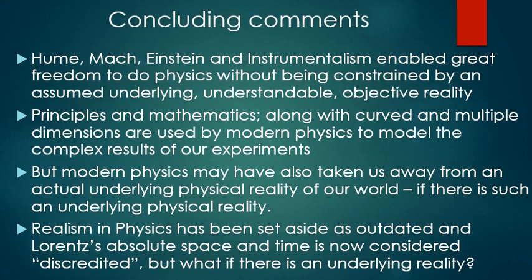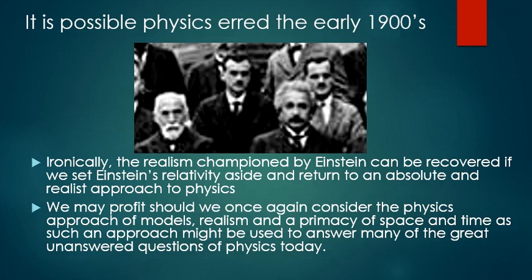Hume, Mach, Einstein, and instrumentalism enabled great freedom to do physics without being constrained by an assumed underlying, understandable, objective reality. Principles in mathematics, along with curved and multiple dimensions, are used by modern physics to model the complex results of our experiments. But modern physics may have also taken us away from an actual underlying physical reality of our world, if there indeed is such an underlying physical reality. Realism in physics has been set aside as outdated, and Lorentz's absolute space and time is now considered discredited. But what if there is an underlying reality? It is possible that physics made a mistake in the early 1900s. Ironically, the realism championed by Einstein can be recovered if we set Einstein's relativity aside and return to an absolute and realist approach to physics.